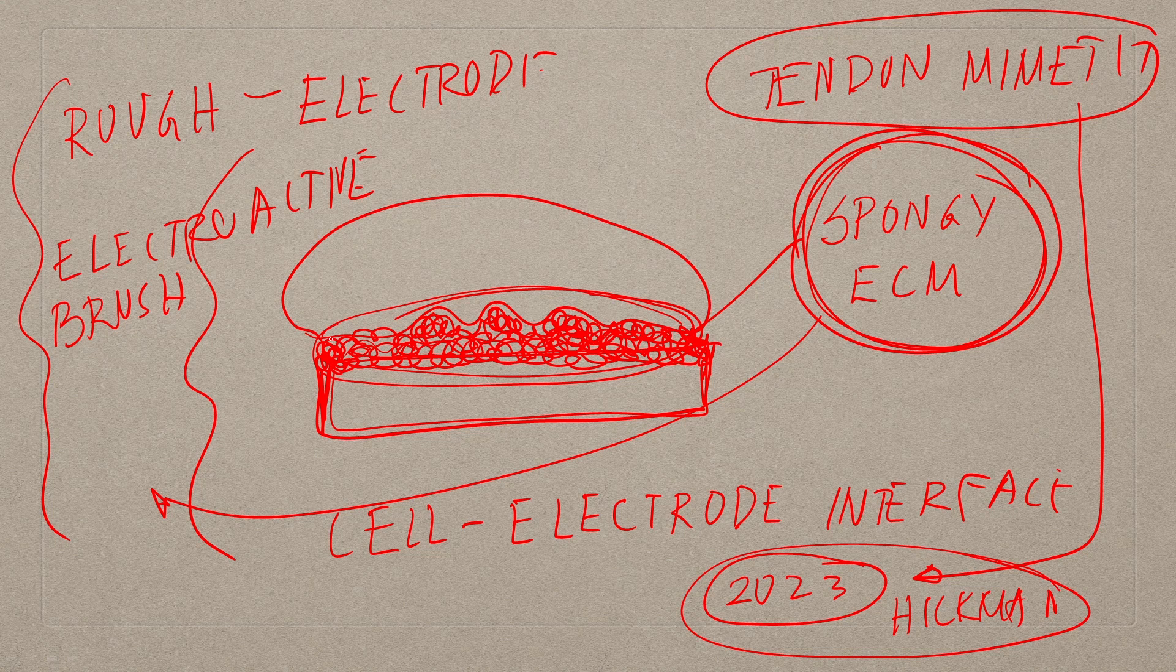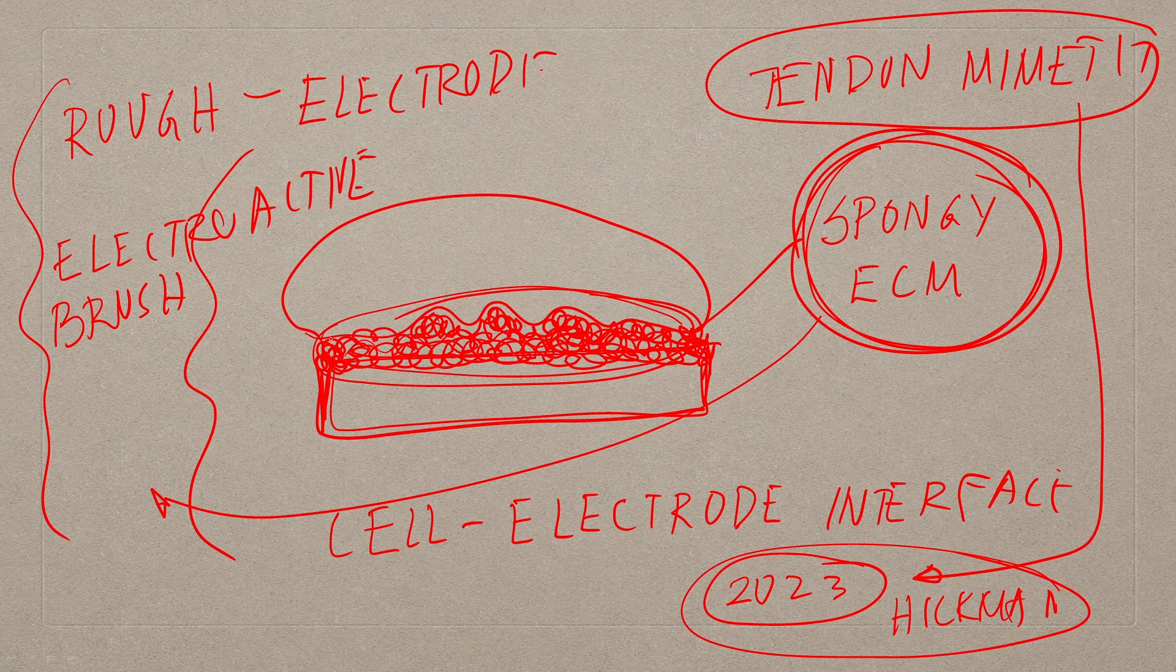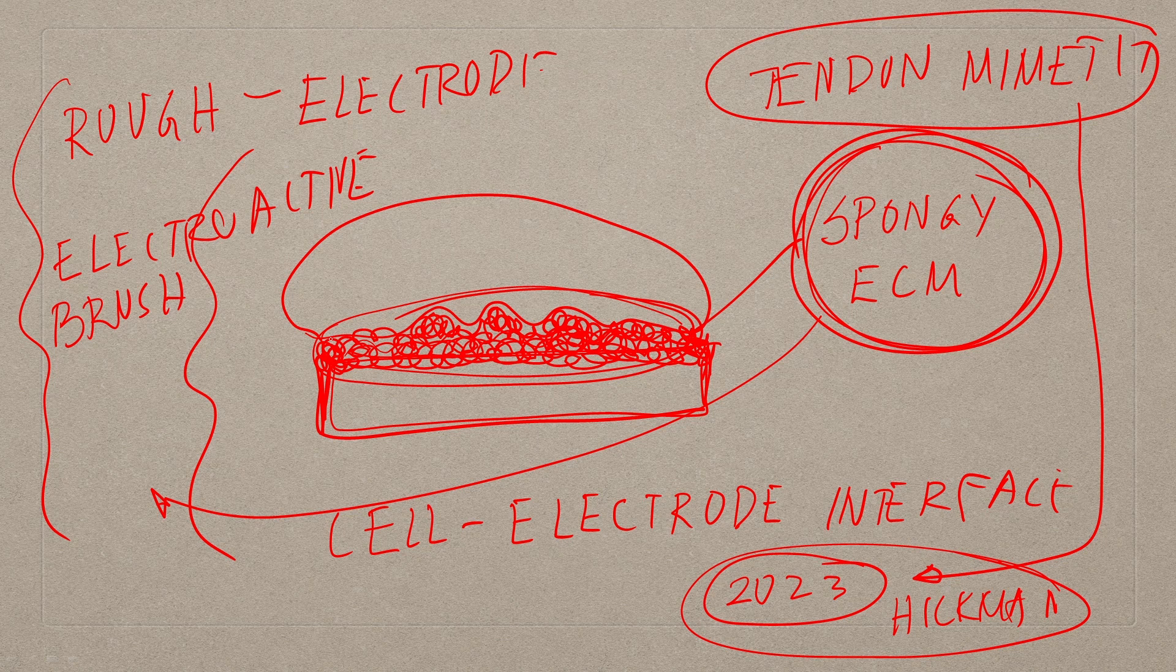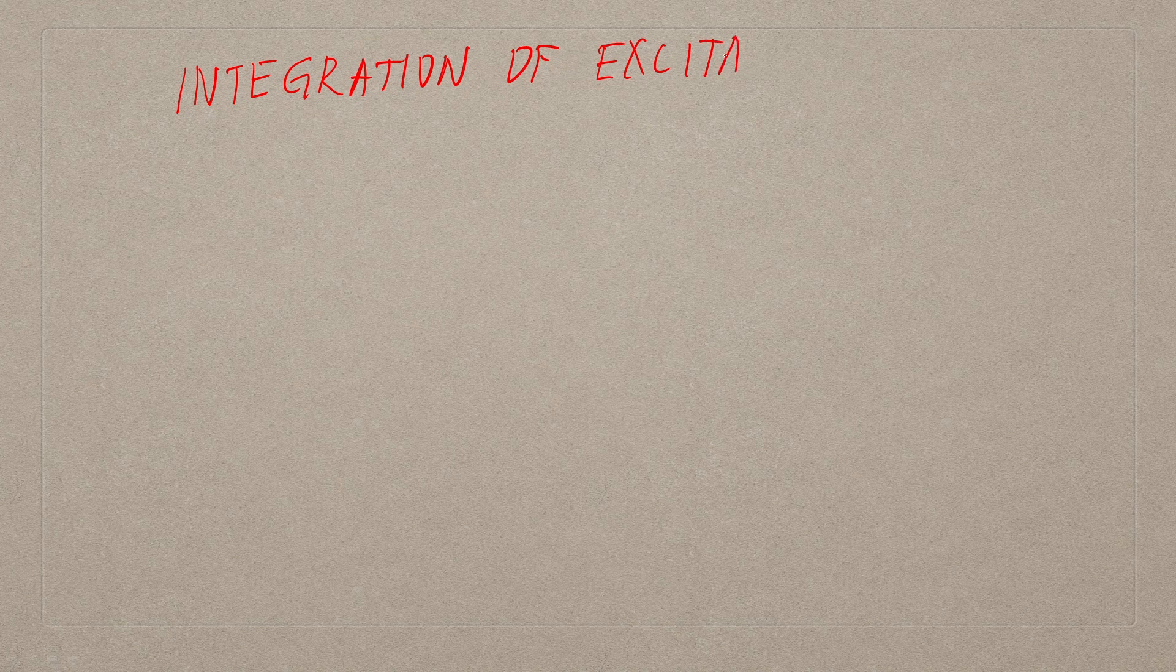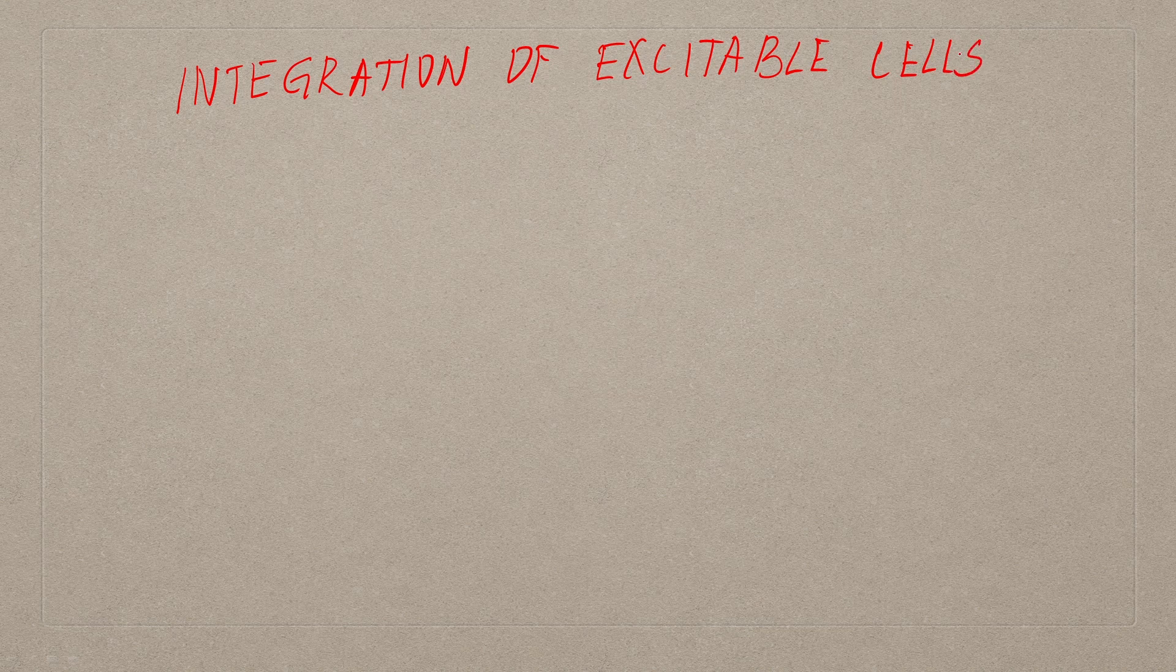You have to realize these are the strategies which are being followed in order to minimize the loss of current, because if there is no contact, they would not be able to record anything. Now electrodes have their own set of limits. The next generation in this game is if we could look at integration of excitable cell with semiconductor.